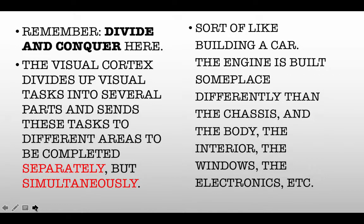Kind of like when a car is constructed, they don't make all the parts in that car factory. They put together the engine from parts built someplace else. They build the chassis in a different location, from parts made in a different location. The body, the exterior, the glass, the windows, the electronic components — they're all brought together into a central location and that car is put together on an assembly line very quickly and very smoothly.